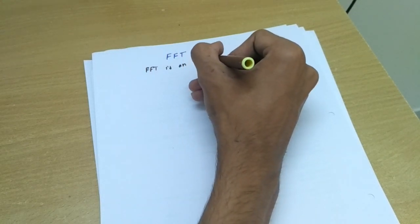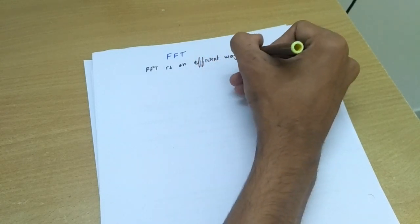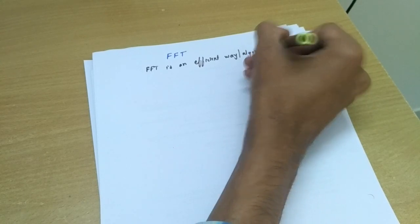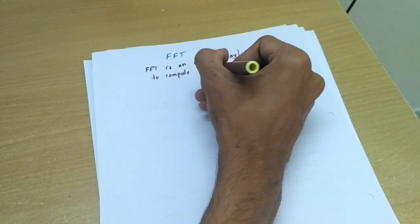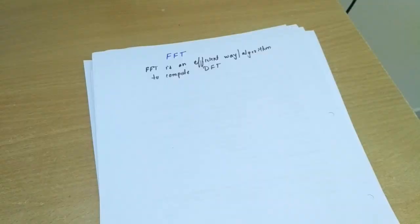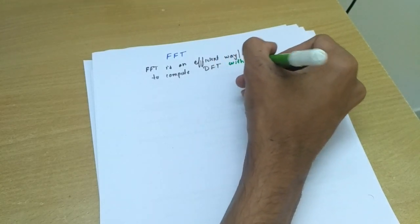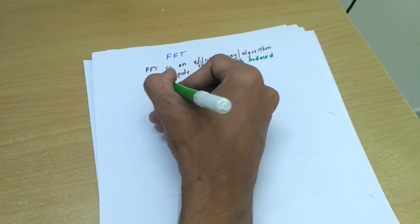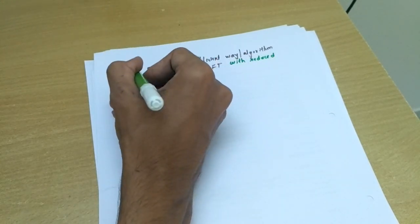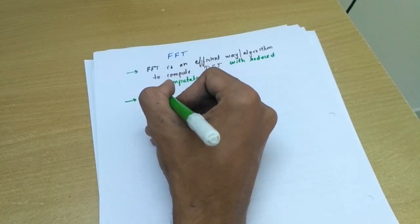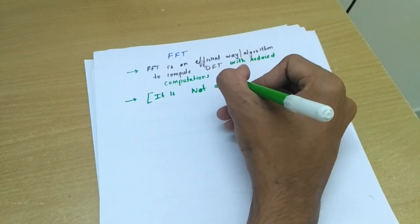FFT is an efficient way or algorithm to compute DFT. The main advantage is with reduced computations. So this is the very first point and it is not a transform, it's just an algorithm.